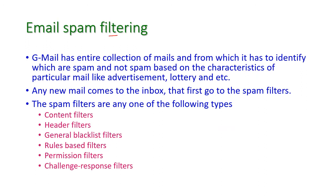The first application is email spam filtering. This may be any email or Gmail. It has an entire collection of mails and has to identify which are spam and which are not spam based on the characteristics of a particular mail — that may be advertisement, lottery, or personal mail. When a new mail comes into the inbox, it immediately goes to the spam filter, which analyzes whether it is a normal, personal, or spam mail. Types of spam filters include content filter, header filter, general block list filters, rule-based filters, permission filters, and challenge response filters.